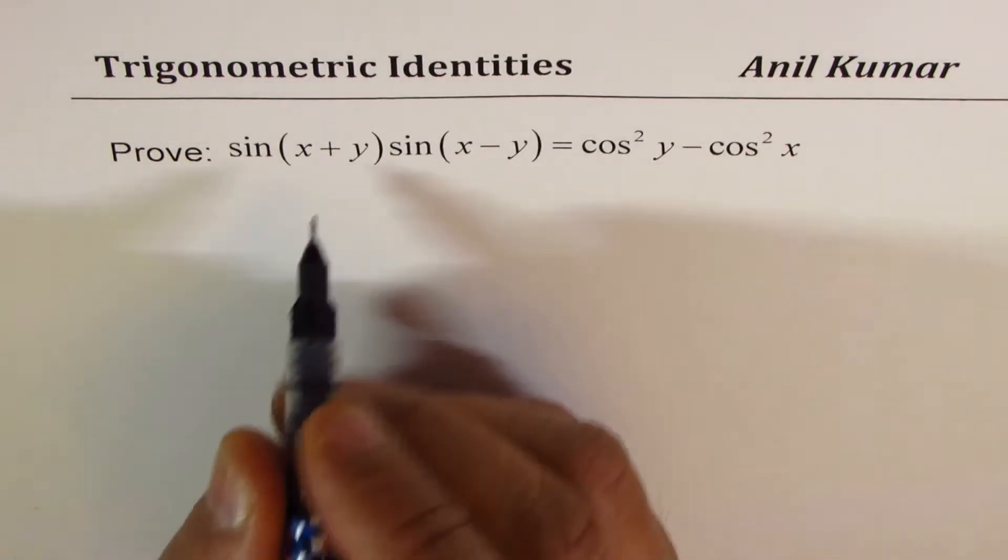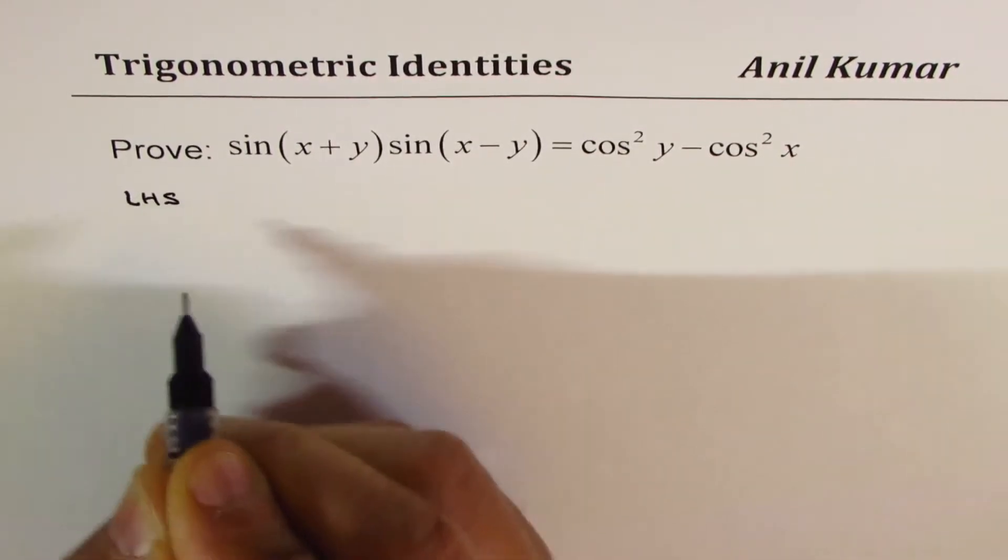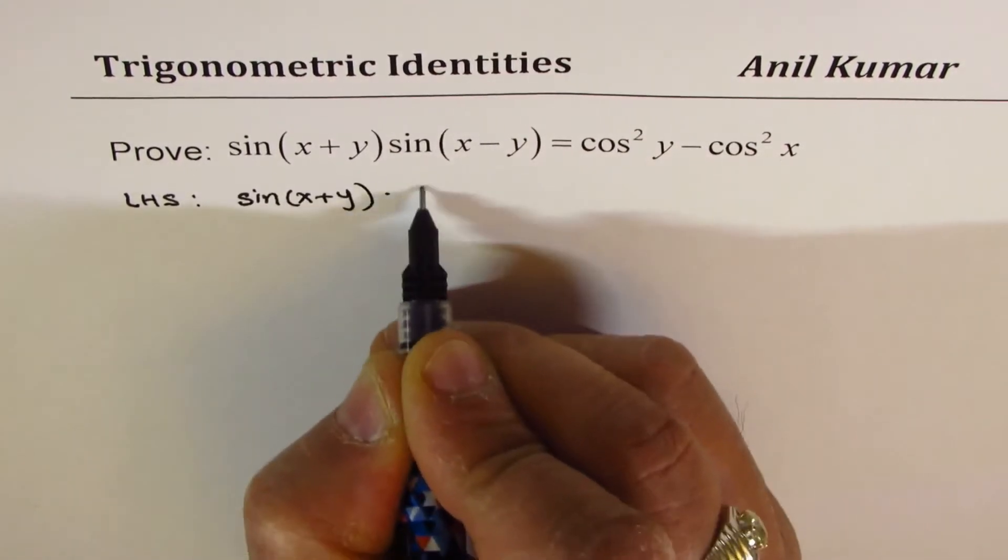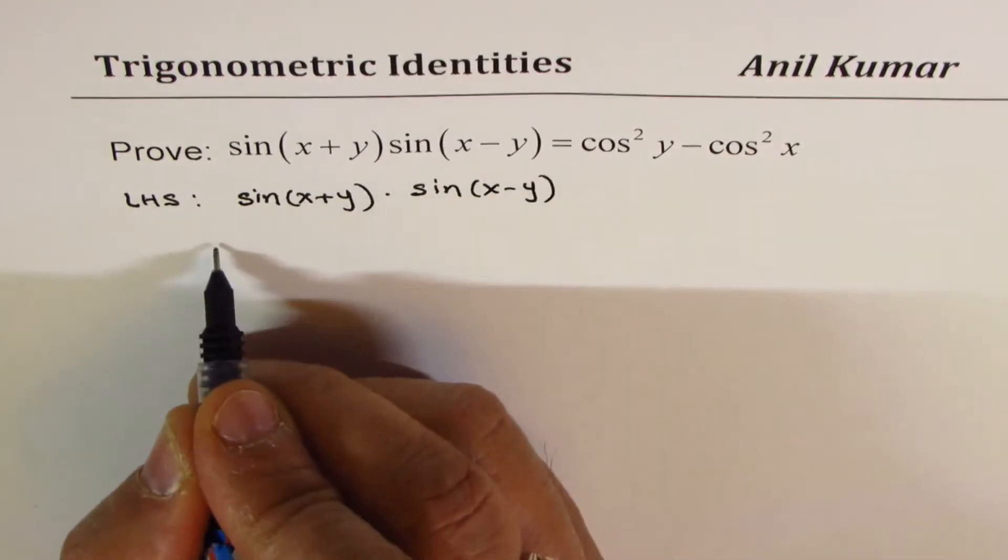So let's start with the left hand side. We have on the left hand side sin(x + y) times sin(x - y). Let's apply the formula.